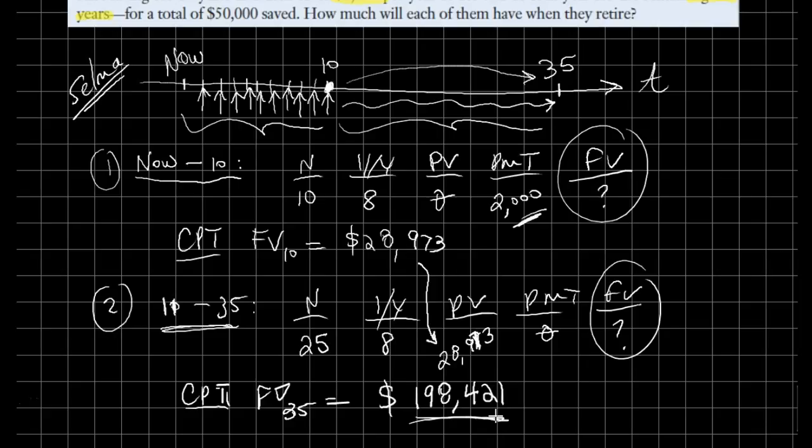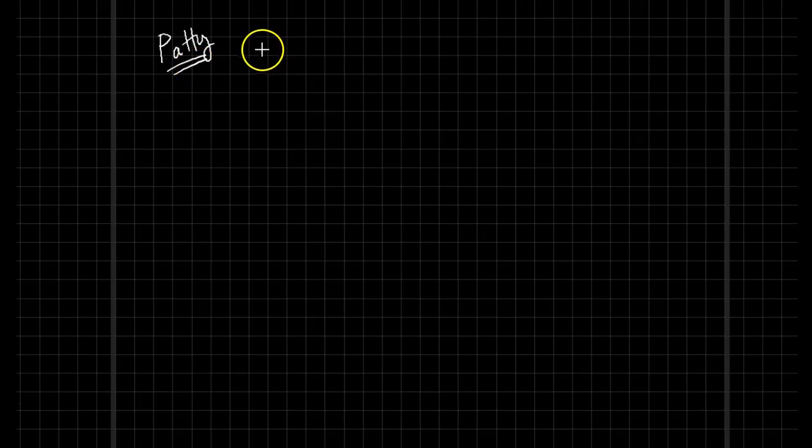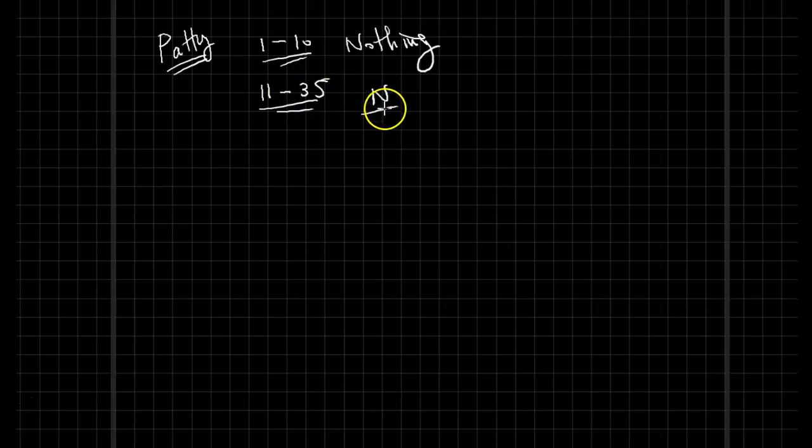Now let's compare this number, which is very close to $200,000, with what Patty has accumulated over the next 35 years. Her case is pretty curious. For the first 10 years from year 1 to 10, nothing.